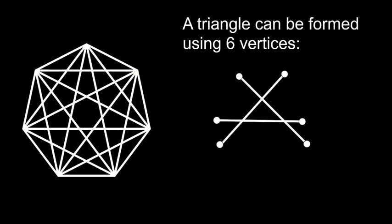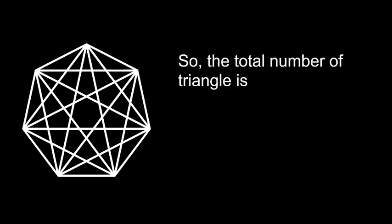Similarly, choosing six vertices gives us one triangle for each selection. The combinations for six vertices from seven result in seven such triangles. Adding all these together...